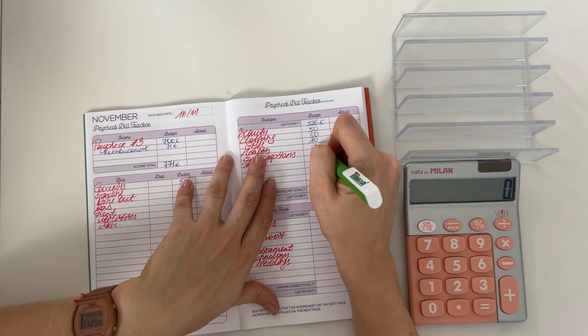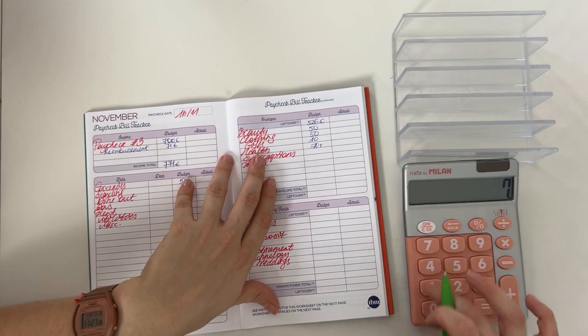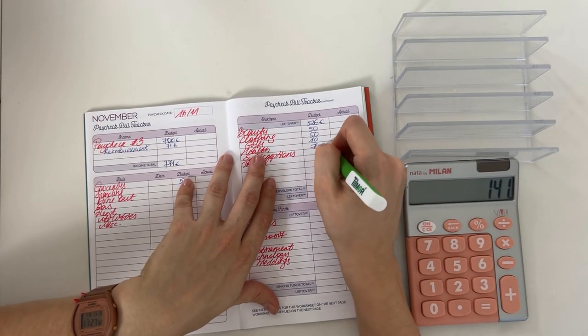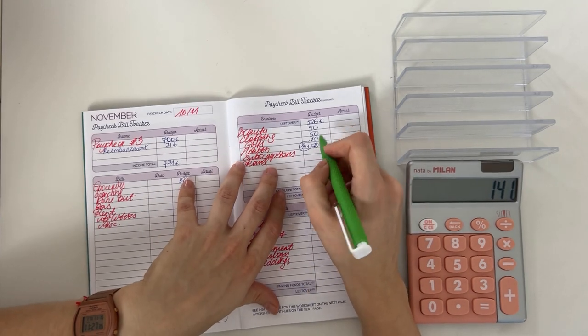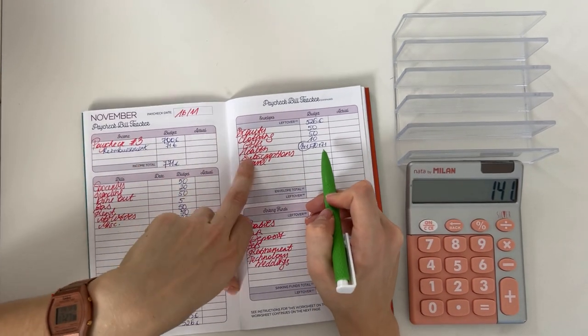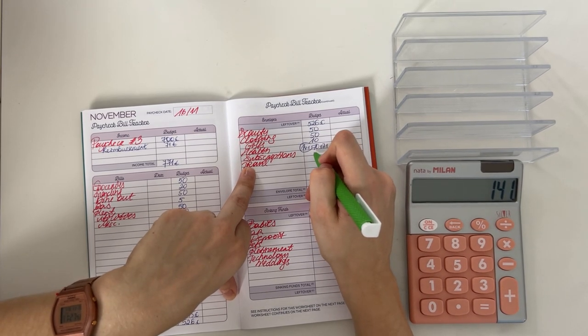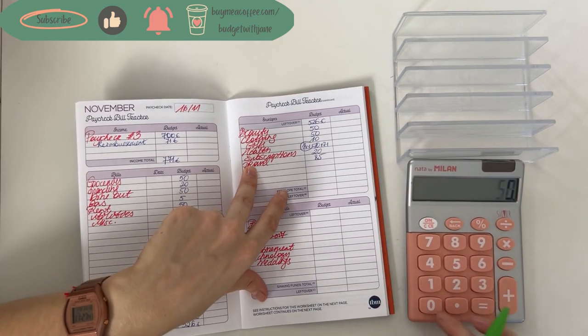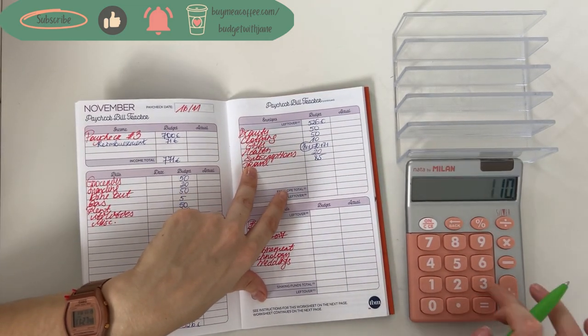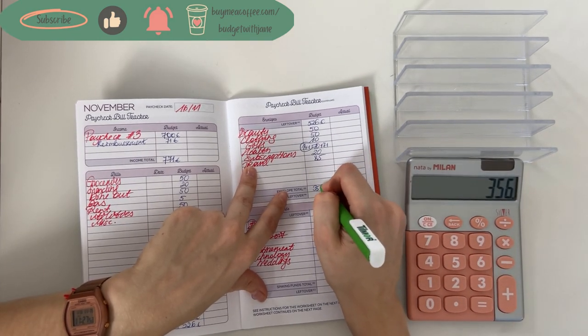Health is going to get 70 plus the 71 that we have allocated, which is 141 in total. So 70 we allocated and 71 from the reimbursement, so that's 141. Subscriptions is going to get a 20, and travel is going to get an 85. So in total for short-term sinking funds, that's going to be 356 euros.